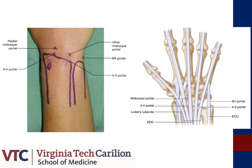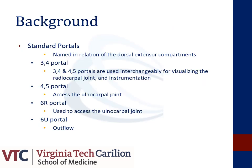Here are several pictorial demonstrations of the more common wrist portals utilized. The standard wrist portals are as follows: the 3-4 portal and 4-5 portal can be utilized interchangeably to visualize the radiocarpal joint and for instrumentation purposes. The 4-5 portal can also be utilized to access the ulnocarpal joint. The 6-R portal is used to access the ulnocarpal joint, and the 6-U portal is predominantly utilized for outflow purposes.